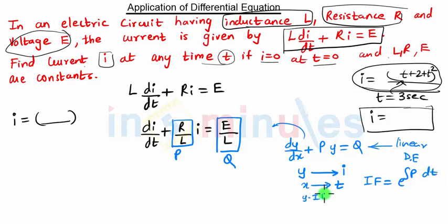is given by y × IF = ∫(Q × IF)dx + C. The formula remains the same: instead of y we write i, so i × IF = ∫(Q × IF)dt + C. Here we have dt instead of dx.